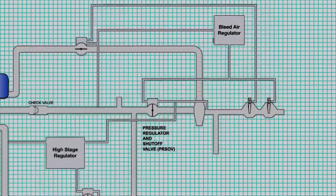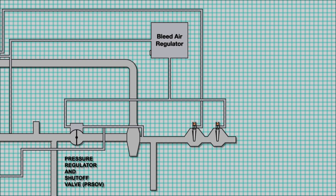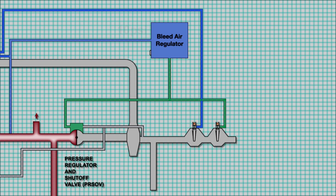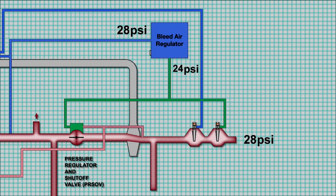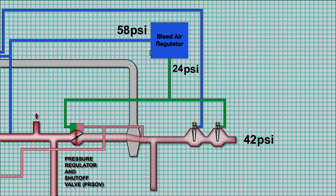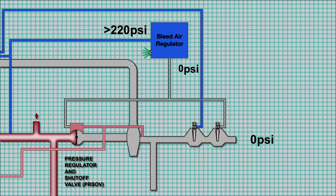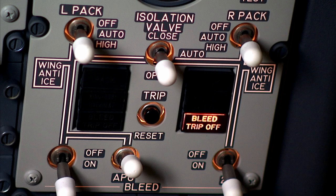Now let's look at the operation of the PRSOV. The PRSOV and the bleed air regulator work together to control the bleed air system pressure. When the engine starts, the PRSOV is closed. As pressure reaches 10 PSI, the PRSOV is fully open. The bleed air regulator regulates the control air to the PRSOV to 24 PSI, which is enough to overcome the downstream sense air and keep the valve open. As engine speed increases further, the PRSOV will regulate duct pressure to 42 PSI. If the HSV fails and allows extremely high pressure into the system, the overpressure switch in the bleed air regulator will cause the PRSOV to close. The overpressure switch will also cause the bleed trip light in the flight deck to come on.